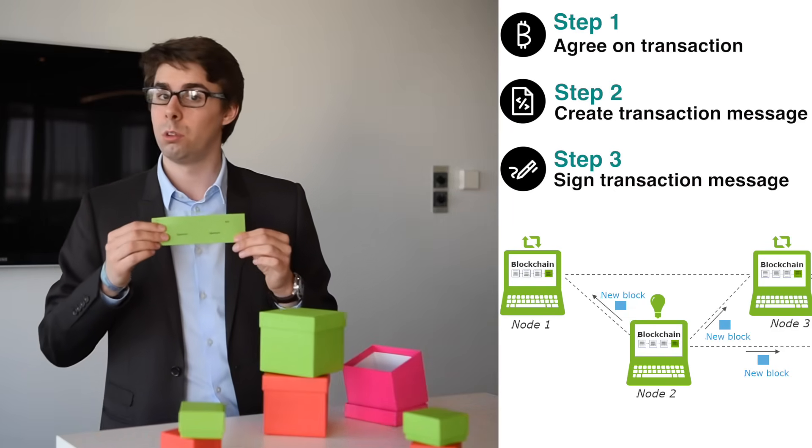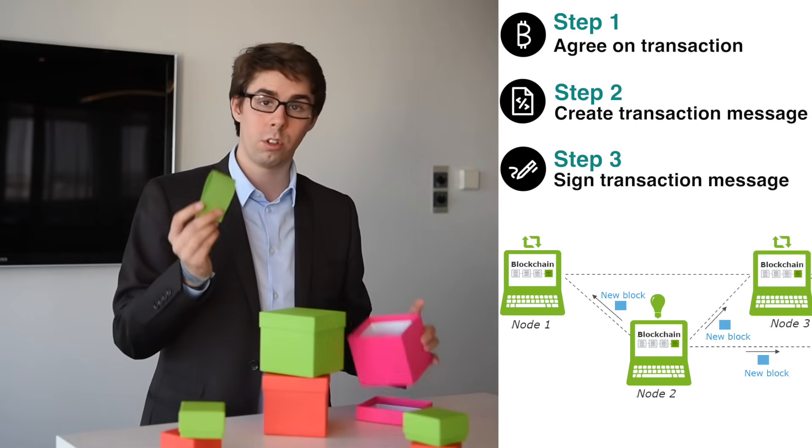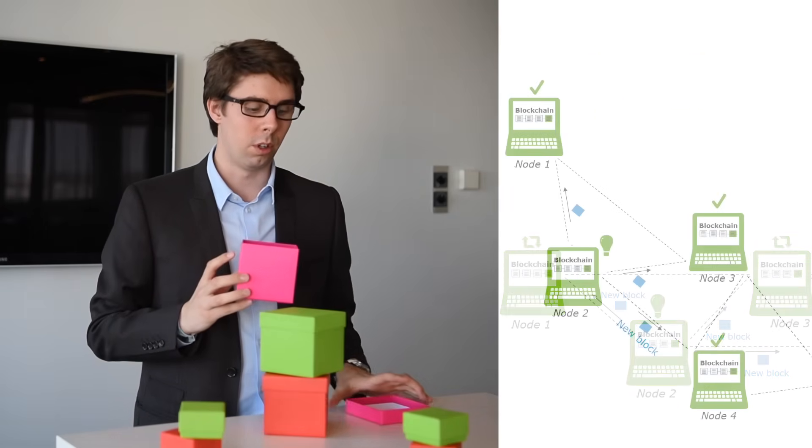And he's going to say from Bob to Alice for an amount of 1 Bitcoin. And he's going to sign it. He's going to store this information inside the block. And then the block will spread on the network.